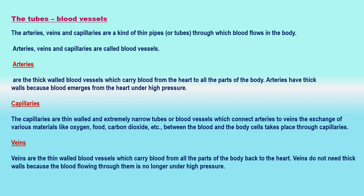Veins are the thin-walled blood vessels which carry blood from all parts of the body back to the heart. Veins do not need thick walls because the blood flowing through them is no longer under high pressure. The main difference between an artery and a vein is that an artery carries blood from the heart to the body organs, whereas a vein carries blood from the body organs back to the heart.